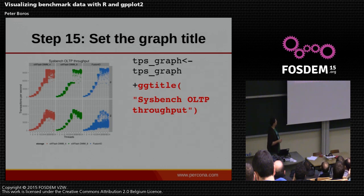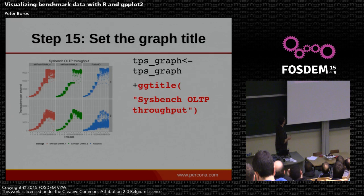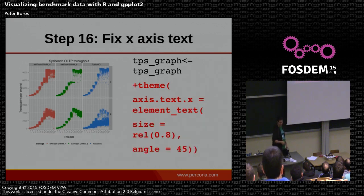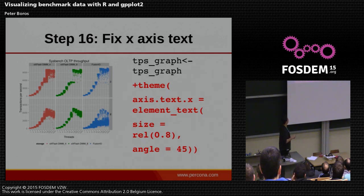We have some stuff to set the graph title, which will appear here. The only thing remaining ugly is the caption for the threads, because with so much faceting, these numbers are pressed together and unreadable. We can fix that by setting the properties of the x-axis, writing them at a 45-degree angle.